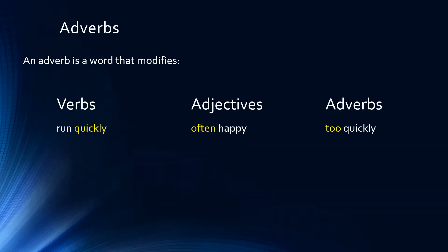Adverbs are also modifiers. An adverb is a word that modifies either verbs, adjectives, or other adverbs. Remember, adjectives modify nouns and pronouns. Adverbs modify verbs — 'run quickly' — or they modify adjectives — 'often happy' — or they modify other adverbs — 'too quickly.' 'Quickly' modifying 'run' is an adverb modifying a verb. 'Often' modifies the adjective 'happy,' and 'too' modifies the adverb 'quickly.'